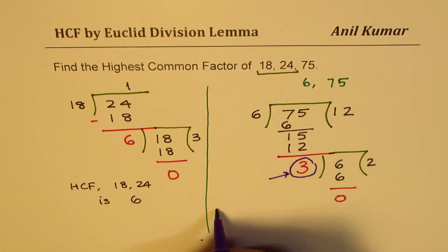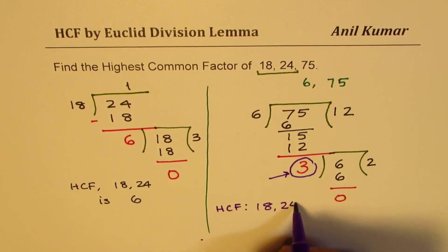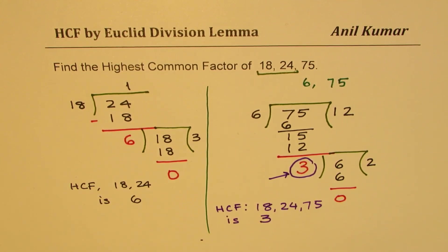So we get the highest common factor between the numbers 18, 24, and 75 is 3. So that is how you get it with this special division. It is the fastest way of getting the highest common factor. There are other techniques also like prime factorization and writing or listing out all the factors and then picking up the highest common factor. This is far more the best way of doing it.